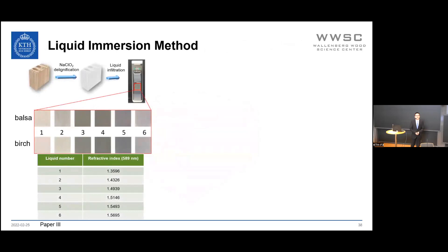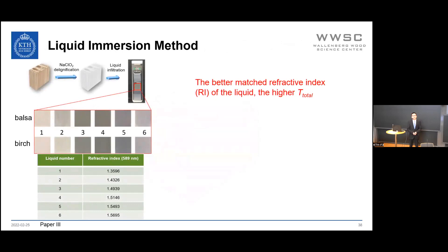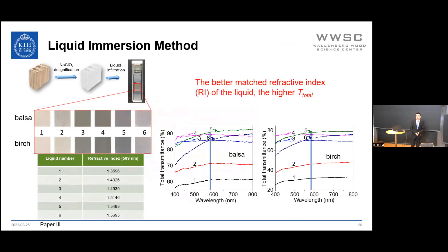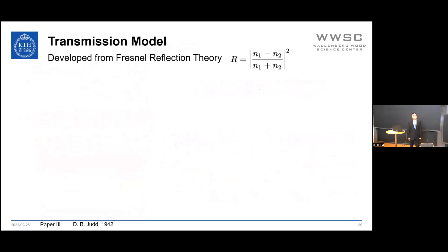Delignified wood substrate is infiltrated with six different liquids with various refractive indices. The principle is that the better the refractive index match between the liquid and the wood, the higher the total transmittance. Results at a wavelength of 589 nm show that liquid number 5 gives the highest total transmittance. However, this alone is not sufficient to find the accurate refractive index value, so a transmission model developed from Fresnel reflection theory is applied.